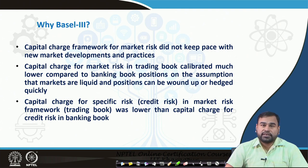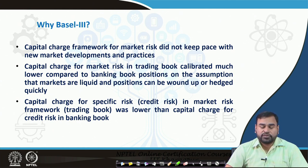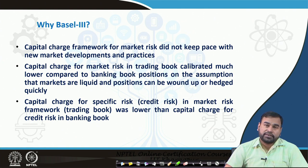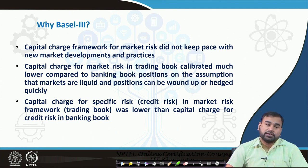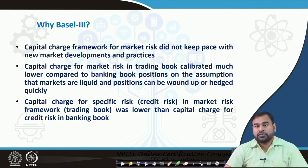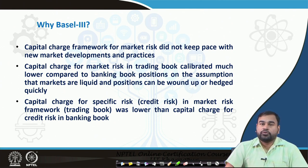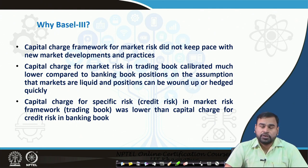The capital charge for market risk in the trading book was calibrated much lower compared to the banking book positions, on the assumption that markets are liquid and positions can be wound off or hedged quickly — but this is not real. Banks cannot hedge positions very quickly or minimize risk easily because the market is more dynamic and fluctuations are very random. A precautionary approach has to be followed by banks to absorb those losses from market fluctuations, but those things were not covered in Basel 2.